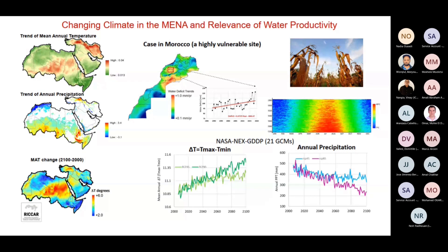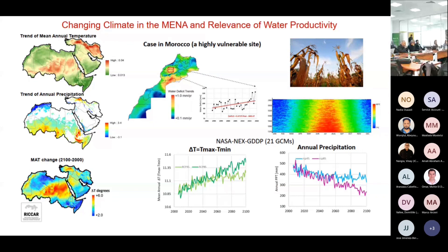We see a huge vulnerability in the Maghreb region — Morocco, Tunisia, Algeria — a statistically confident vulnerability that we don't see in other parts of MENA. This is a region where there is a decreasing trend of precipitation, a region which was relatively humid and where we have rain-fed farming.